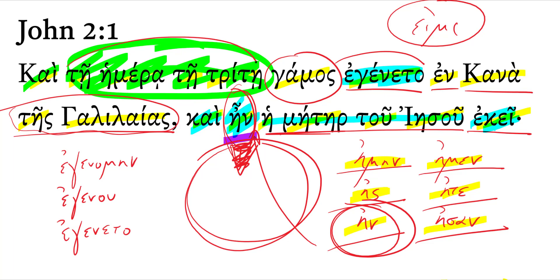Egeneto is coming from the verb ginomai, which means to happen, to be, to become. And it has an irregular aorist - that's why we have a spelling change in the stem. Maybe you were required to memorize the first person singular: egenomen - 'I was, I became, I happened.' Egenu, egeneto.